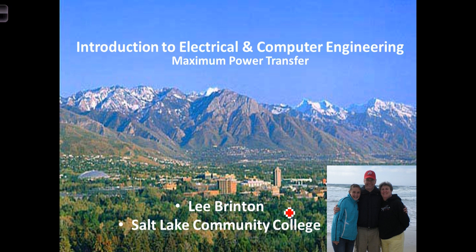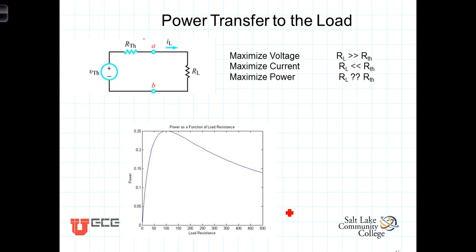In this video, we're going to introduce the concept of maximum power transfer to a load resistance. To do so, we're going to take a Thevenin equivalent circuit, attach a load to that equivalent circuit, and then ask ourselves how do we get the most power, or under what circumstances will we get the most voltage delivered to the load, or what does it take to get as much current to that load as possible? We recognize that R_Thevenin and R_L are in series with each other, and we have a voltage divider in play here.